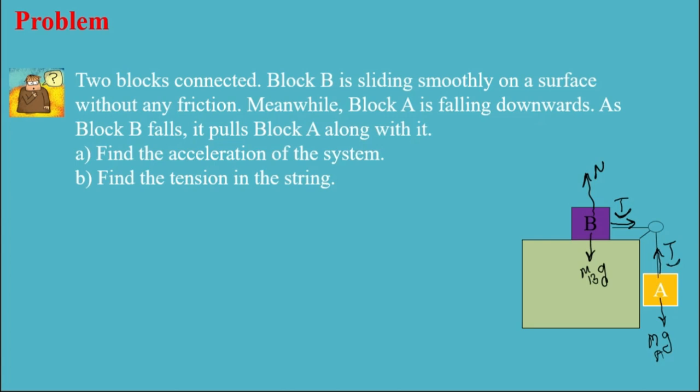Now I'm gonna write the second Newton's law for B in x axis. For B in x axis, the total F equals sum of F, and in the x direction I only have T, which equals m_B times acceleration. This is what I have for B in x axis.